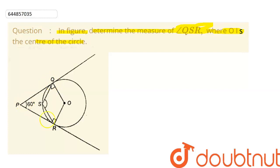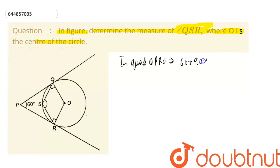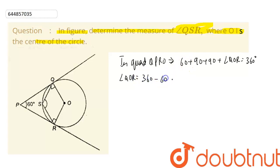Now considering quadrilateral QPRO, the sum of all angles of a quadrilateral is 360 degrees. So we have 60 plus 90 plus 90 plus angle QOR equals 360 degrees. Solving this, the measure of angle QOR is 360 minus 60 minus 180, which gives us angle QOR as 120 degrees.